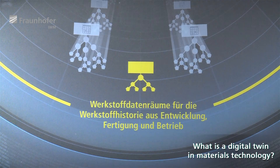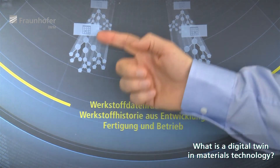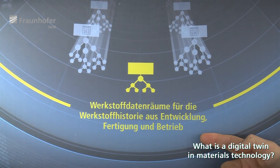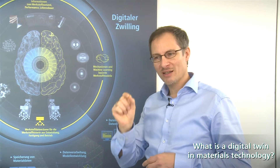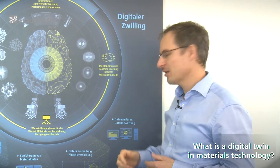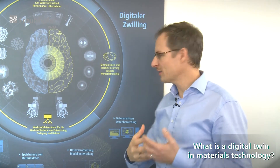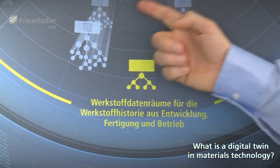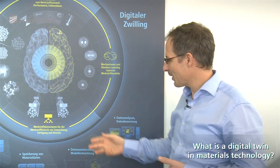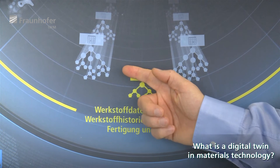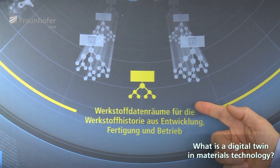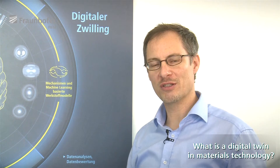The input we need to provide is, on the one hand, the data we put in. We call them data spaces because we don't want to be too specific — it's not just a single data point, but it can also be a connection between information. It's more like what you can see in a tree diagram, where the data is connected to each other; datasets are connected and they make up the information we need for the digital twin.